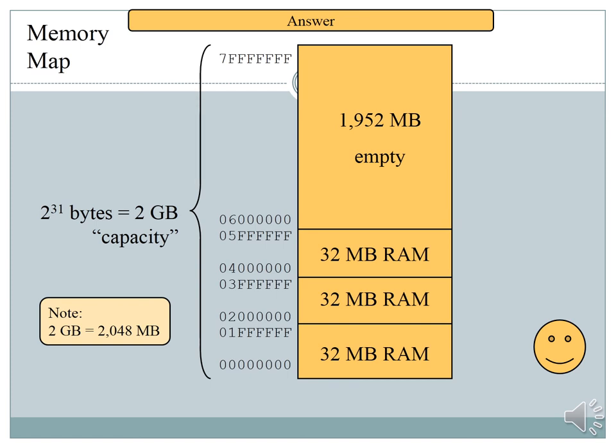The solution: 1,952 megabytes will be empty and three 32-megabyte blocks of RAM are being used. To convert 32 megabytes to hexadecimal: the starting address is 0x000000, and the ending address is 32 megabytes converted. You add one to get the starting address of the next location, and repeat — adding another 32 megabytes — so the starting address of the next block follows sequentially.